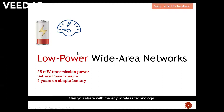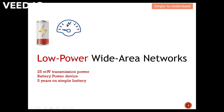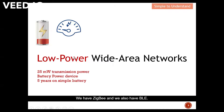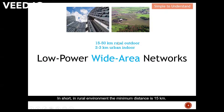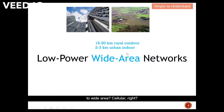Can you give any wireless technology that belongs to low power? We have ZigBee and we also have BLE. Next, let's move on to wide area. Wide area means we must be able to send data kilometers away. In rural environments, the minimum distance is 15 kilometers; in urban areas, the range is expected to be between two and three kilometers. Cellular technology also belongs to wide area, but it is definitely not considered low power.